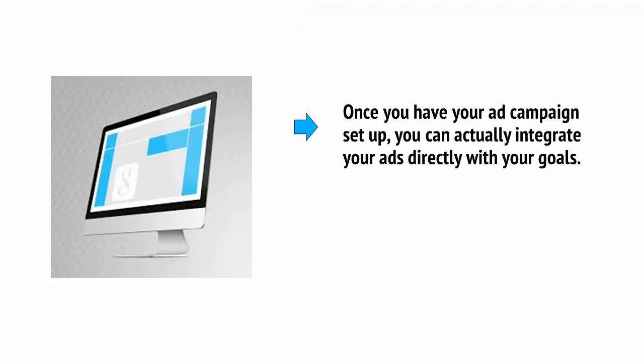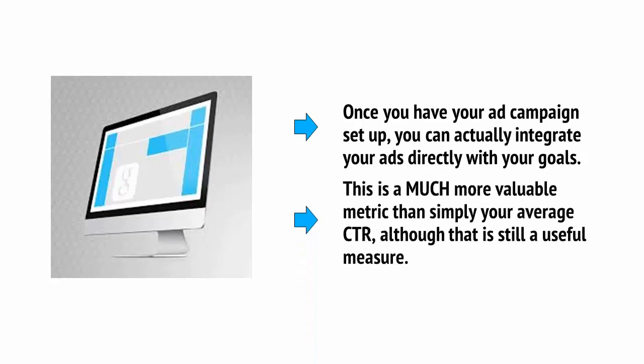You can use Bing Ads to set up goals and then see how customers are interacting with those goals. We discussed goals in an earlier video in the context of Google Analytics, and how you could use these to identify the best keywords for your ad campaigns. Once you have your ad campaign set up, you can actually integrate your ads directly with your goals. This is a much more valuable metric than simply your average CTR — your click-through rate — although that is still a useful measure.